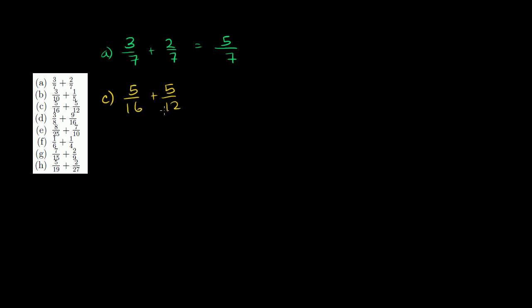So what's the smallest number that's a multiple of both 16 and 12? So let's see, 16 times 2 is 32. Not there yet. Times 3, 48. That seems to work. 12 goes into 48 four times. So let's use 48 as our common denominator.